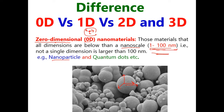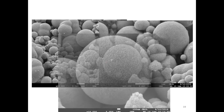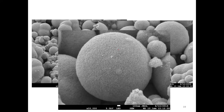The example of zero-dimensional materials is nanoparticles or quantum dots. If you measure the x-axis, y-axis, and z-axis of these materials, all three dimensions are well below 100 nanometers. So this class of material we call zero-dimensional.